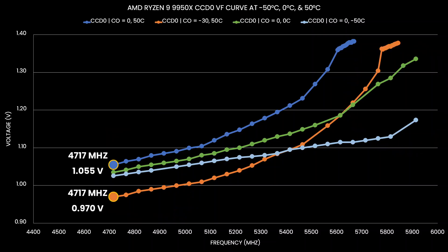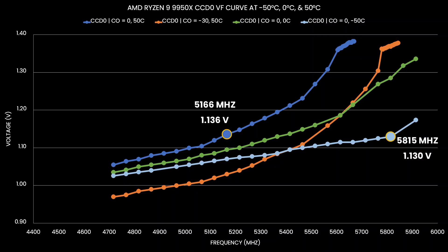For example, at minus 30 Curve Optimizer the voltage required for 4.7 GHz decreases by 85 mV. In contrast, reducing the operating temperature by 100°C — from plus 50 to minus 50°C — only reduces voltage by 30 mV. However, with a temperature of minus 50°C we get over 5.8 GHz at 1.13V, an improvement of more than 600 MHz over default, while minus 30 Curve Optimizer only yields about 5.5 GHz — still a 300 MHz improvement from stock, but 200 MHz less than at minus 50°C.